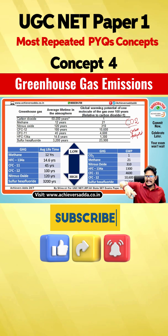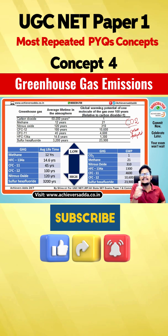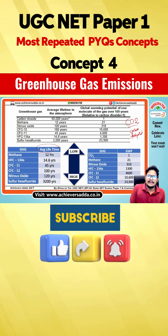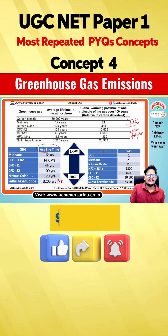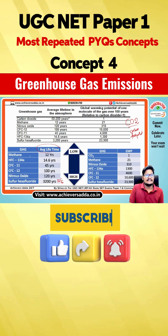Once a greenhouse gas enters the atmosphere, how many years will it stay — its lifetime? From a lifetime point of view, sulfur hexafluoride has the highest lifetime. Nitrous oxide stays in the atmosphere for 120 years, CFC-12 for 100 years, CFC-11 for 45 years, HFC for 14.6 years, and methane for 12 years.